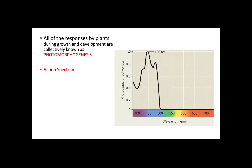For example, at a 436 nm wavelength, a specific response is triggered, increasing its effectiveness. In plants, the molecules that receive light are known as photoreceptors or pigments, such as the famous chlorophyll.